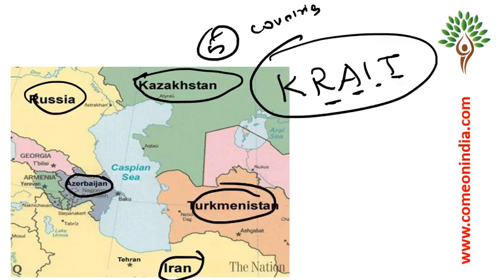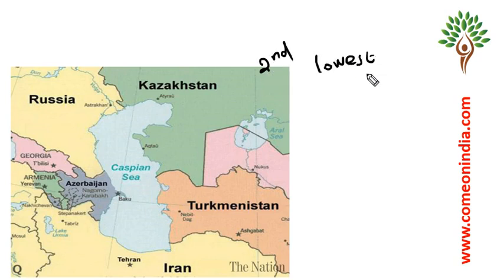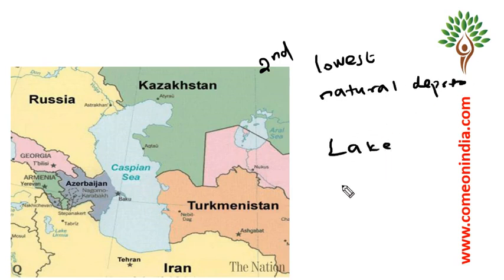Another important prelims point is that the Caspian Sea is the second lowest natural depression on Earth after Lake Baikal. Lake Baikal is the world's lowest natural depression.